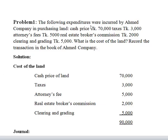The following expenditures were incurred by Ahmed Company in purchasing land. Cash price is $70,000. Tax is $3,000. Attendance fees is $5,000. Real estate is $2,000. Clearing and grading charges are $5,000.